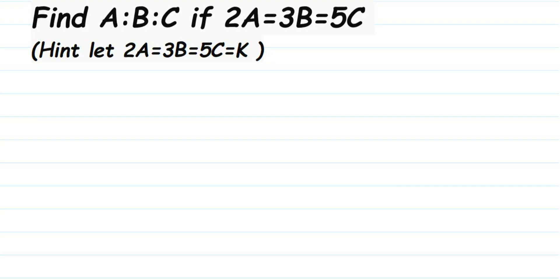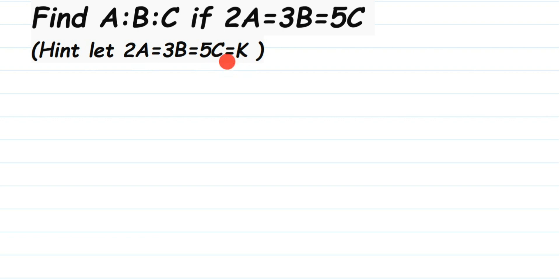Hi everyone. Here is a question I got from comments: find A to B to C if 2A equals 3B equals 5C. The question also gives a hint to let 2A equal 3B equal 5C equal K. I'm going to explain what happens if they have not given this hint and then how to solve it with the hint. I'll explain first with K and then without K.